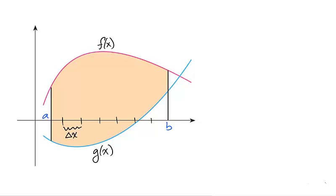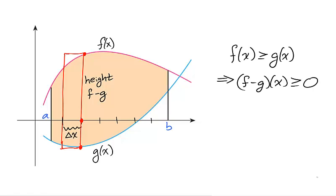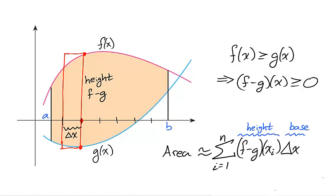We divide the interval [a, b] into subintervals of length delta x. Using the right endpoints of the subintervals, the rectangle fit between the curves will have height f minus g. Since f is larger than g, we know that f minus g is positive. Notice that subtracting g from the inequality yields f minus g is greater than or equal to zero. We approximate the area with the sum of f minus g times delta x — that is, the height times the base of each rectangle.